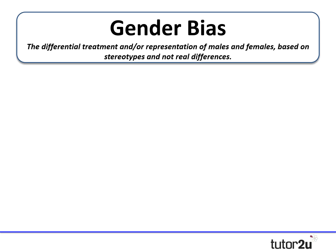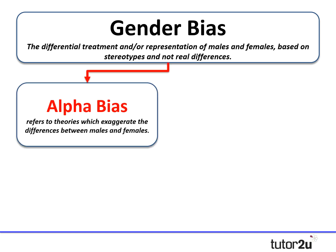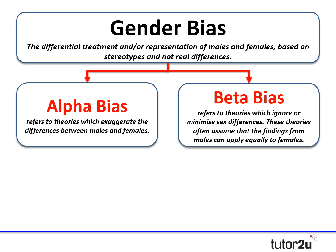Delving a little deeper into gender bias, there are actually two different types. There's alpha bias, which is when a theory or piece of research exaggerates the differences between males and females. And then there's beta bias, which is where a theory ignores or minimises the differences between males and females. So if a piece of research is suffering from a beta bias, it's assuming that findings from a male piece of research apply equally to females. You do need to know both of those — they are named in the spec.